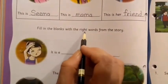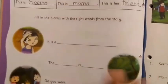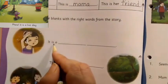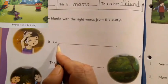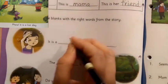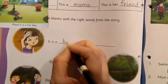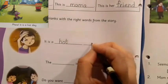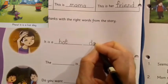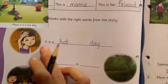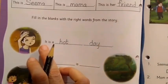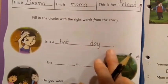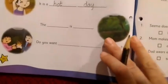Fill in the blanks with the right words from the story. Look at this image. Do you remember the sentence? I am showing you the image here also. How was the day? The day was a hot day. So here we are going to write in the first blank the word hot, and in this blank we will write the word day. Let us read the sentence: It is a hot day, and then a full stop.